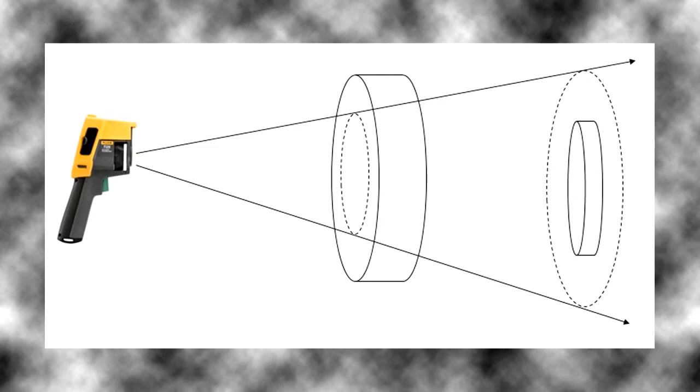In the second case, the target is smaller than the spot size and any temperatures that are in that area will be averaged in with the temperature of the target.